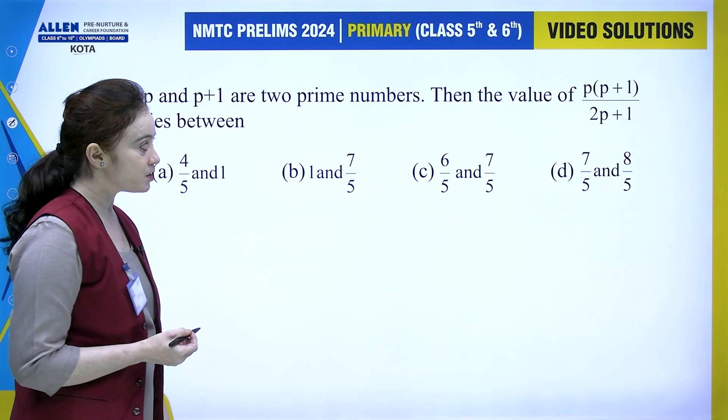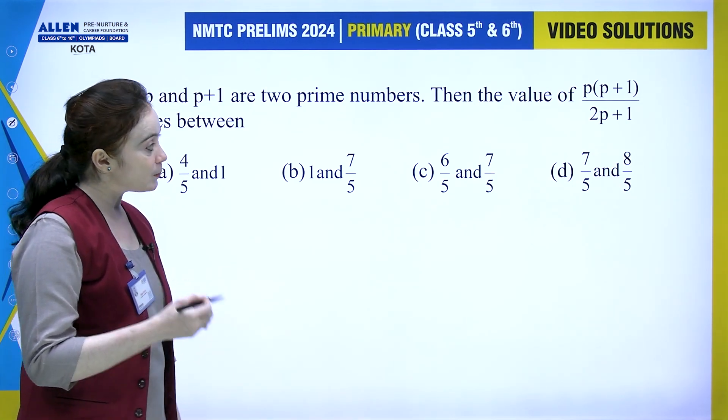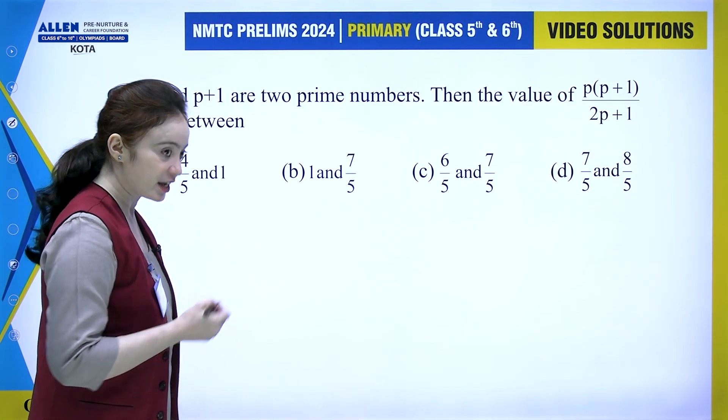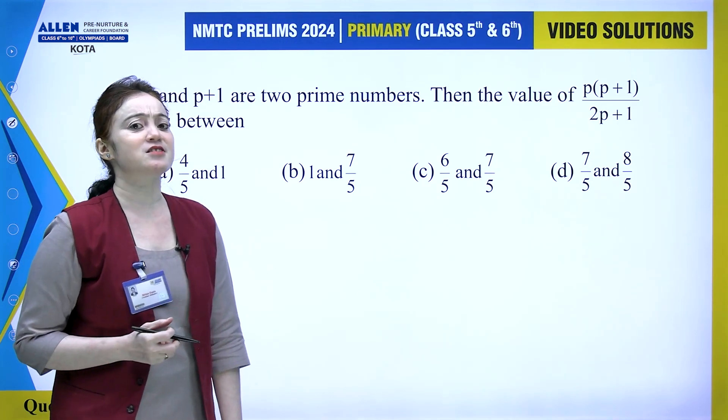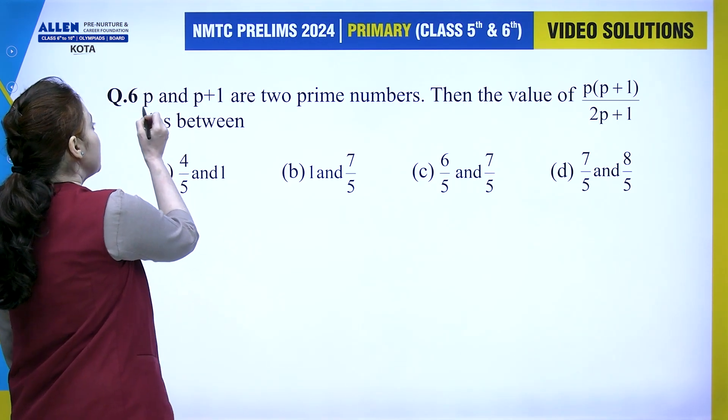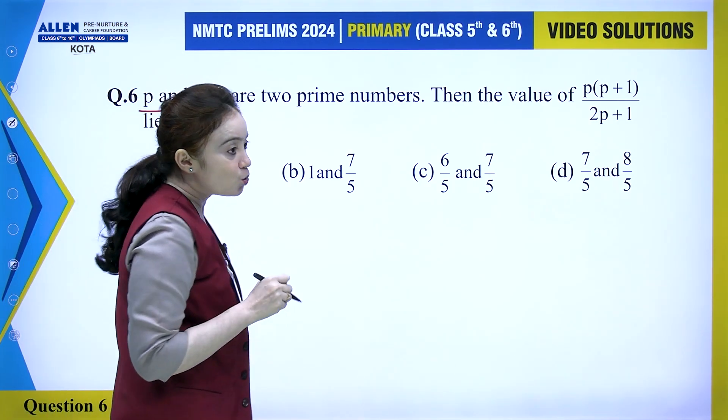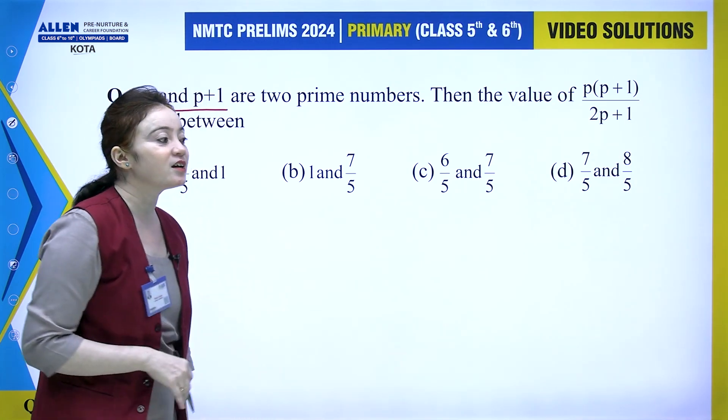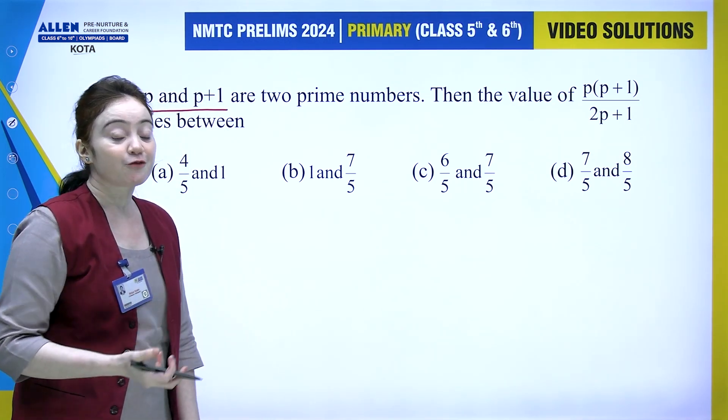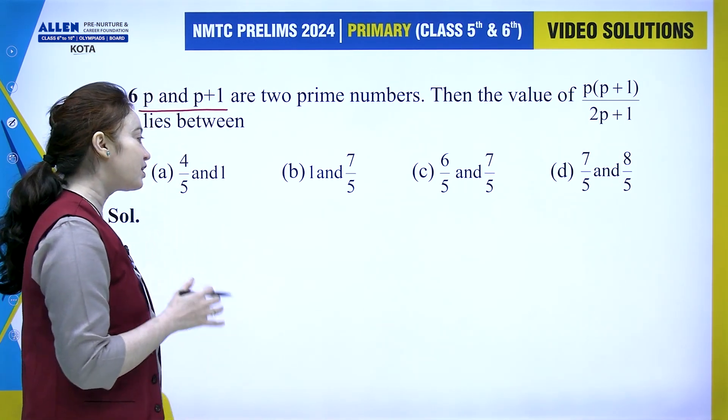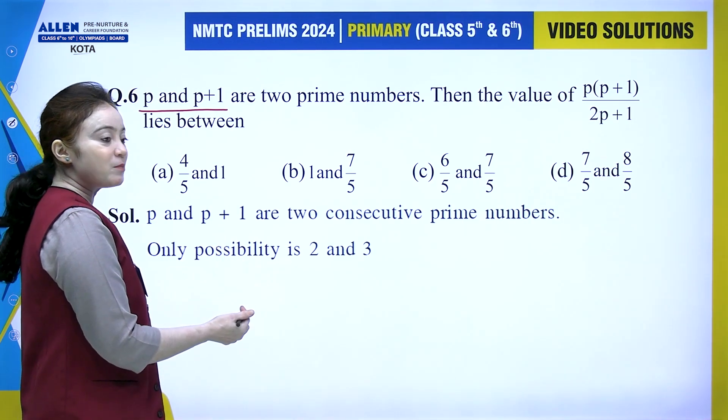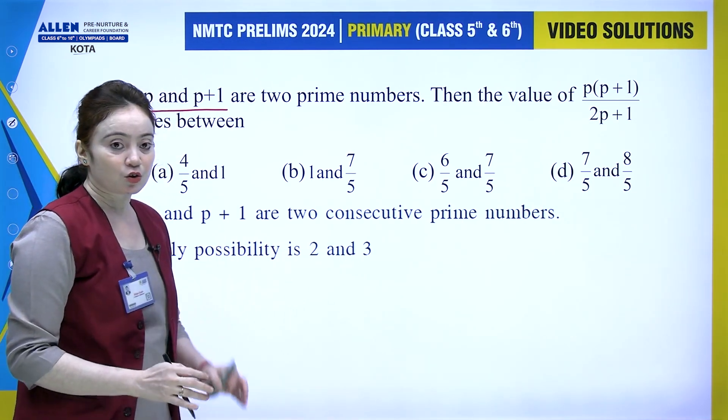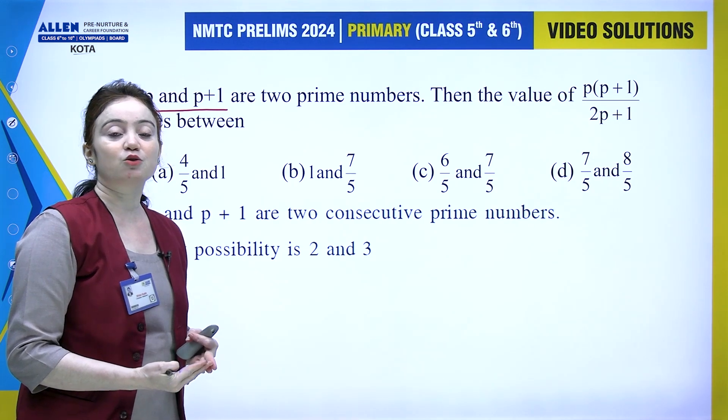P and P plus one are two prime numbers. The value of P into P plus one whole upon 2P plus one. This is a very easy question. What is given? P and P plus one are two prime numbers. You should recognize that two consecutive prime numbers means we're talking about 2 and 3, because if consecutive numbers come, one will be even, and the only even prime number is 2.